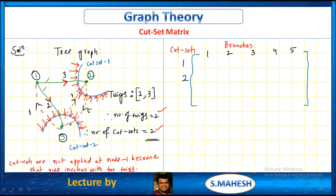Branch 1, cut set 1 — no combination, so 0. Branch 2, cut set 1 — again 0. Branch 3, cut set 1 — same orientation as cut set 1, so 1. Branch 4, cut set 1 — same as cut set direction, so 1. Branch 5, cut set 1 — it is opposite to the cut set direction, so minus 1.